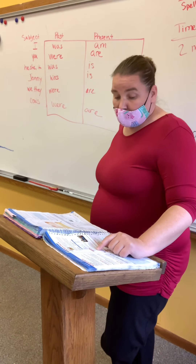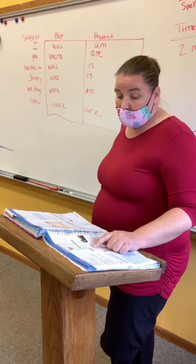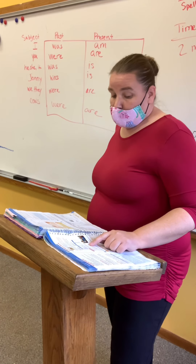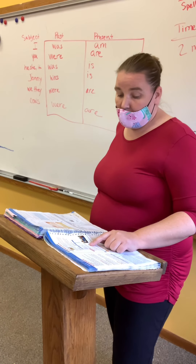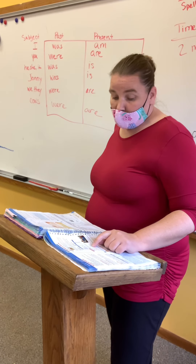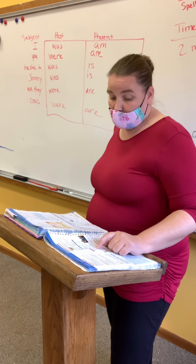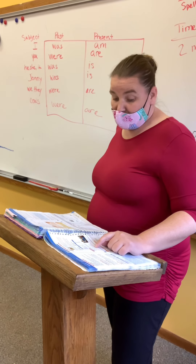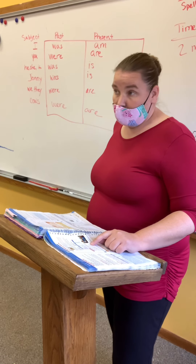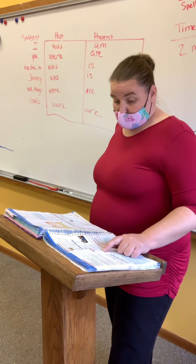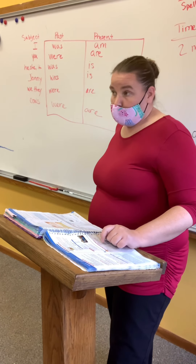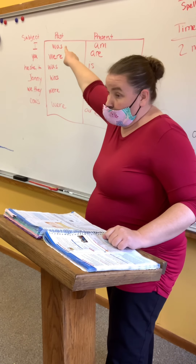So let's read the sentences. 'The porch light blank on' — was or were? Was. And is it past or present? Past. 'I blank in the front seat of the car' — present, I am. 'My brothers blank in the back' — present. My brothers are in the back. 'We blank ready for vacation' — we were ready for vacation. Past.